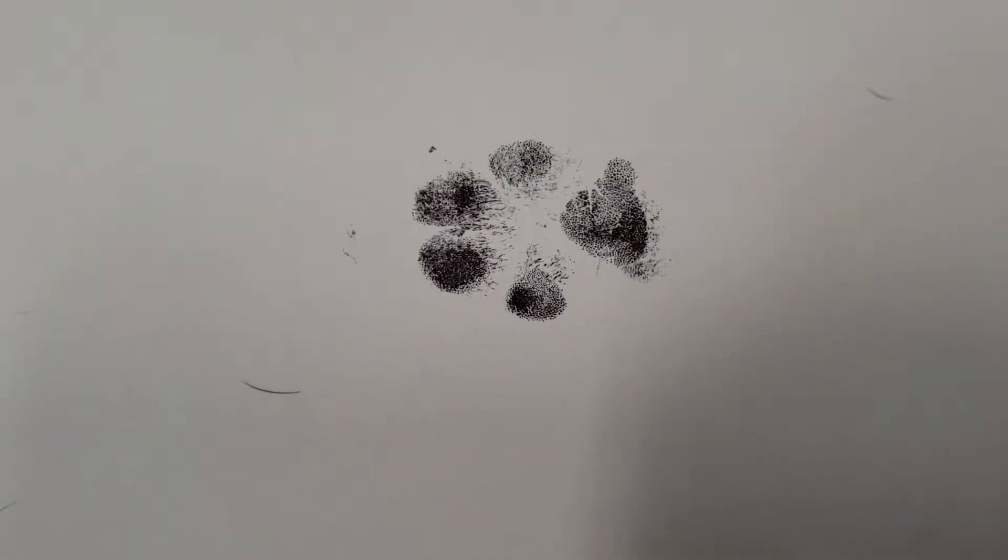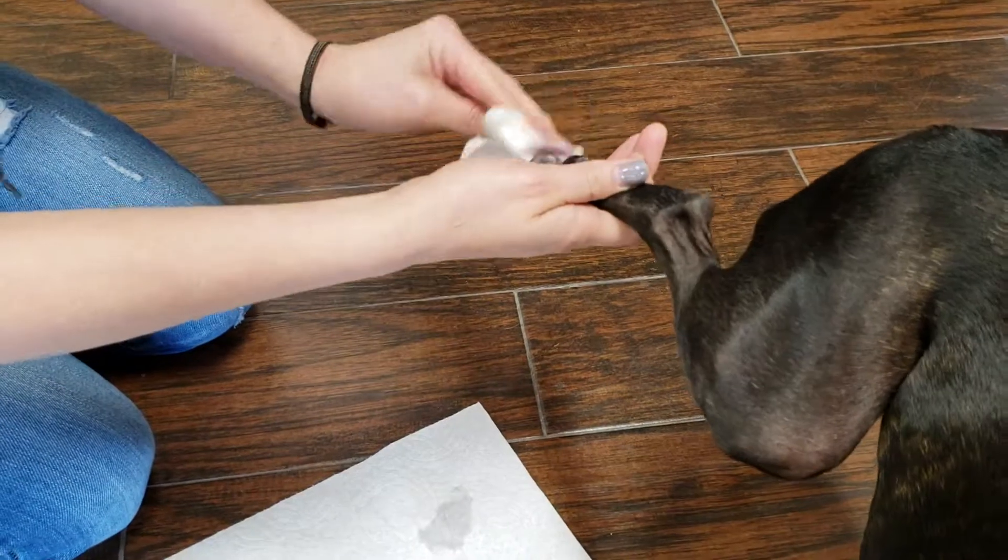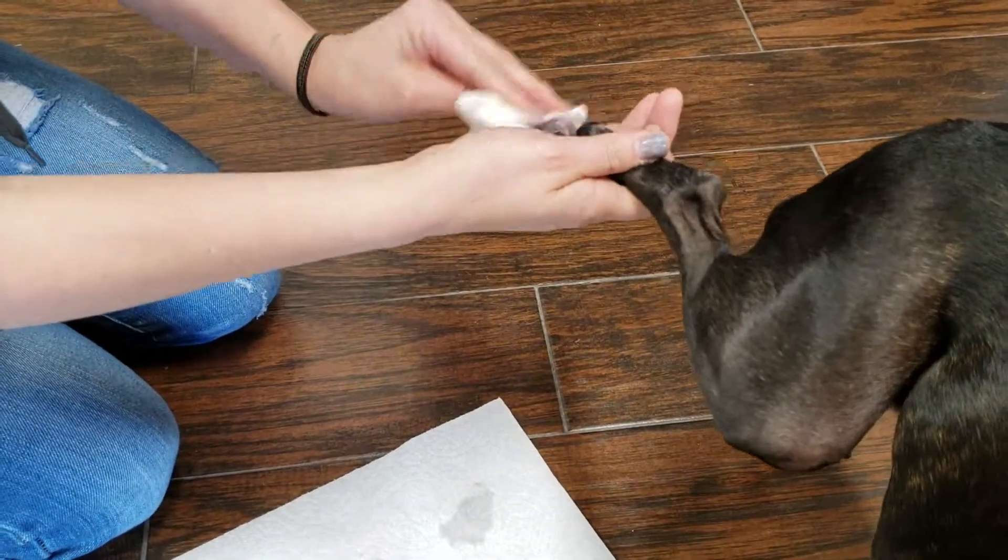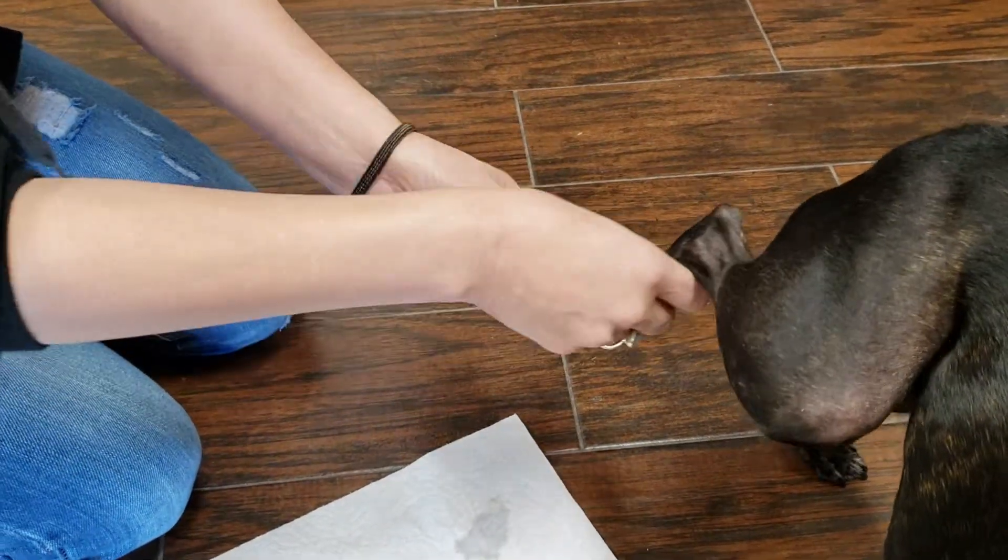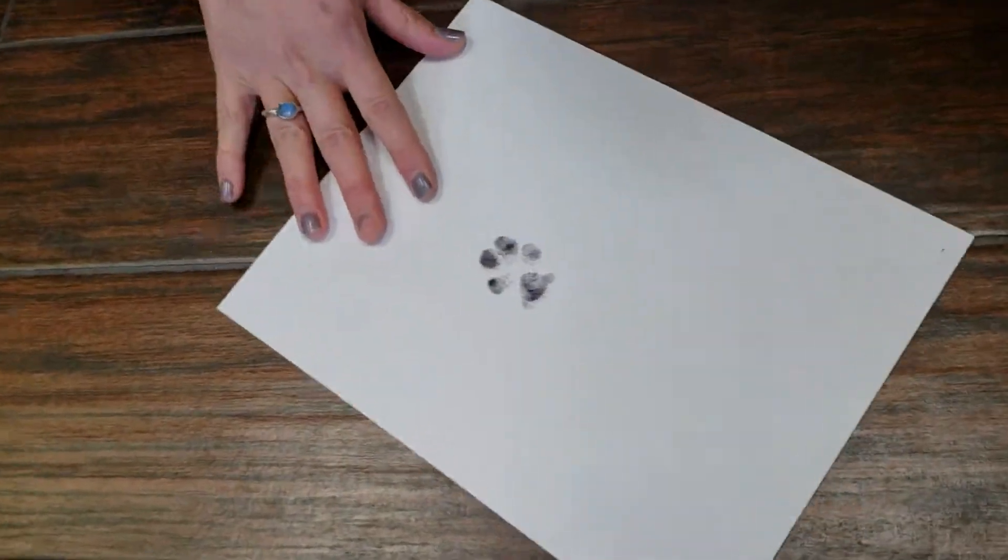With the wet paper towel, the ink comes off pretty easily. Again, the hind paw works really well. And if you have a dog that has a lot of fur, you may want to trim the fur.